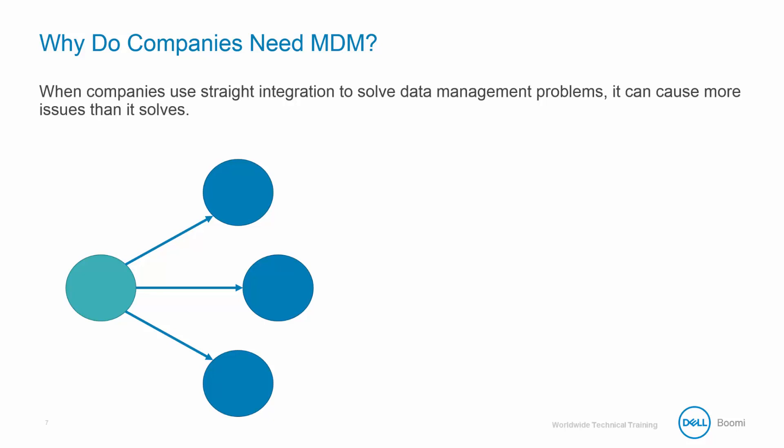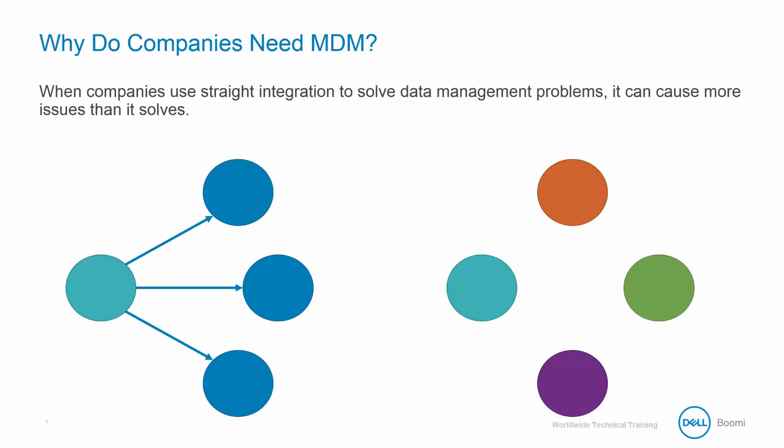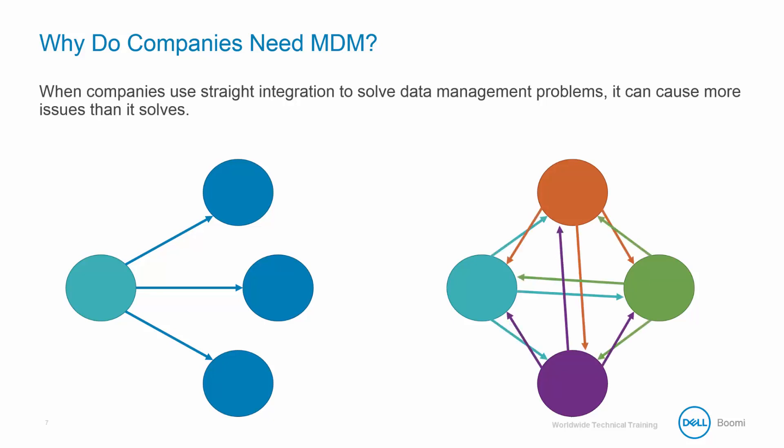For example, let's take these four sources. In order to verify that all the data in each other one is the same, they would need to have their own set of processes to do so. As you can see, not only is this complicated, but it's slow, inefficient, and has a large risk of having an error occur somewhere along the way.